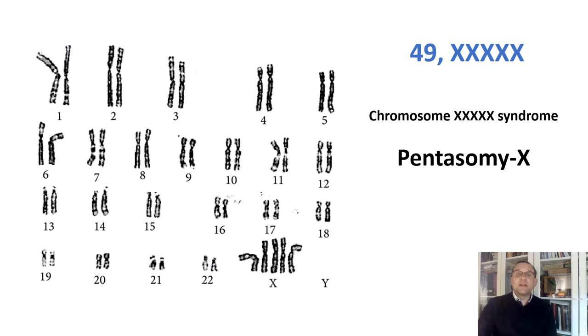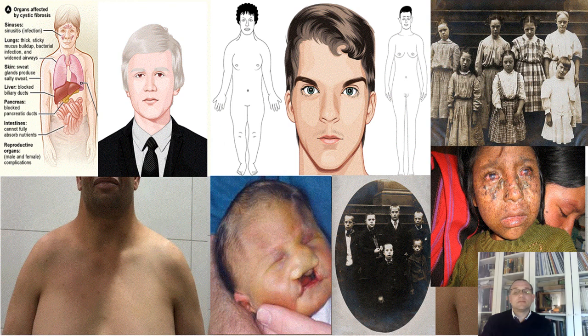Pentasomy X is a sex chromosome anomaly caused by the presence of three extra X chromosomes in females. So what did we learn during today's lecture? We learned that mutations can cause all sorts of conditions and diseases, including different forms of cancers. There are also beneficial mutations that help organisms to survive in the constantly changing environment.